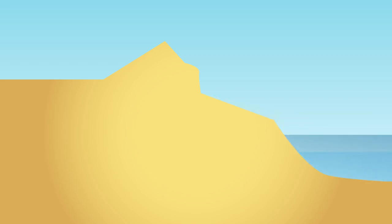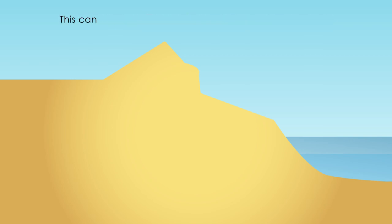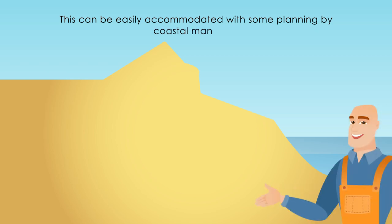However, for average beach slopes, and even with expected increases in atmospheric carbon, the researchers predict that sandy shorelines will move inland by less than 20 metres by the end of this century. This can be easily accommodated with some planning by coastal managers.